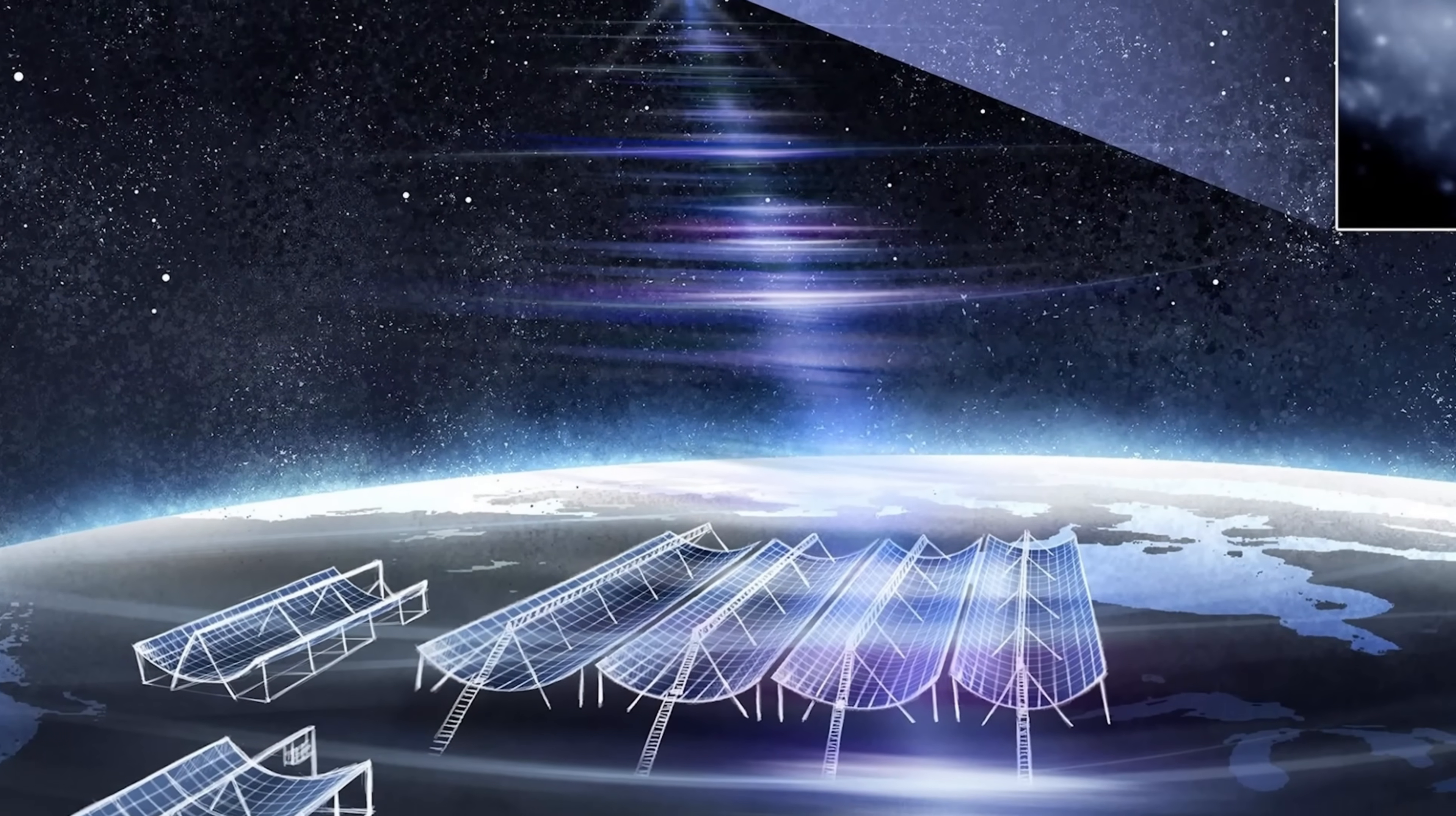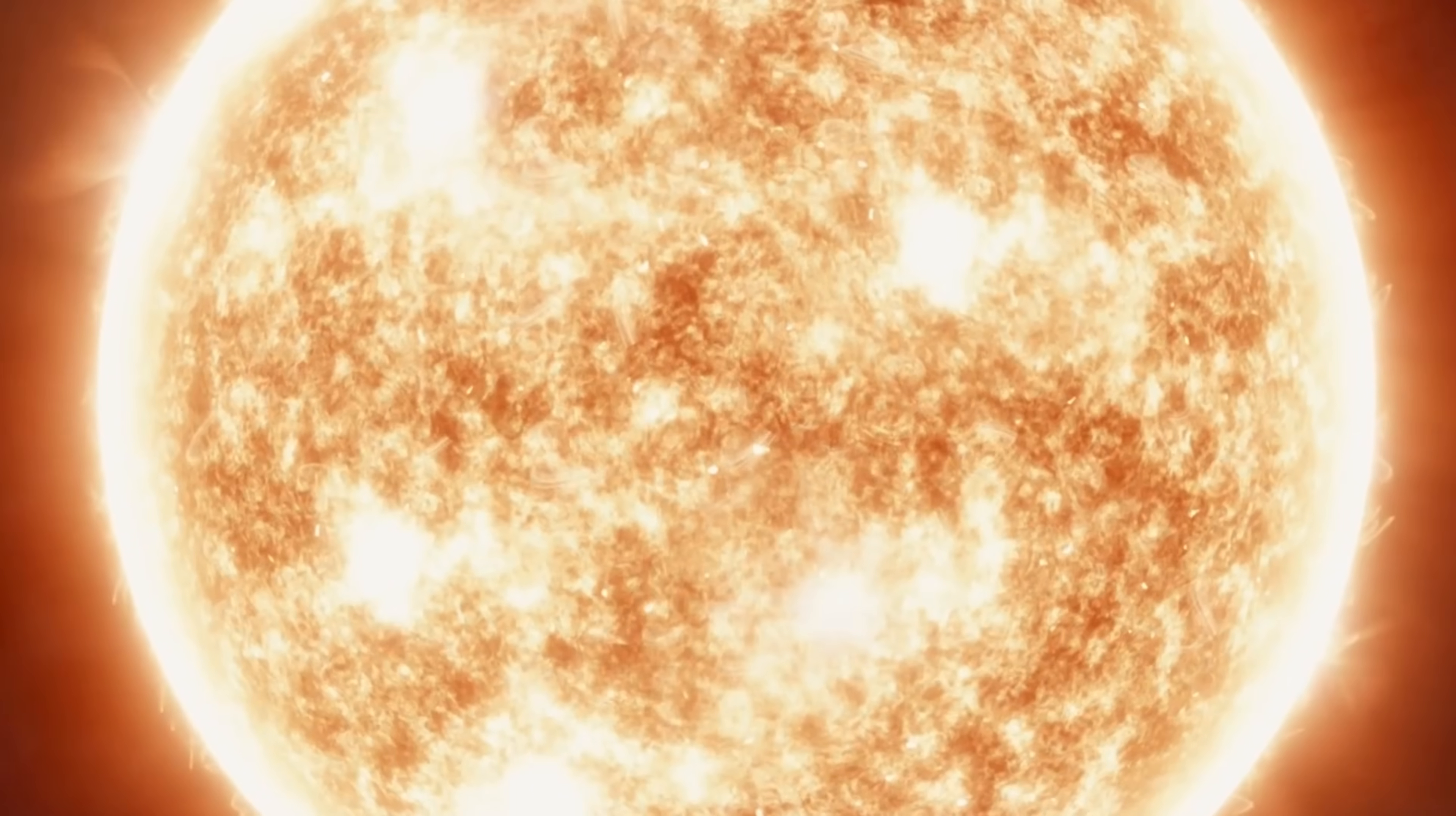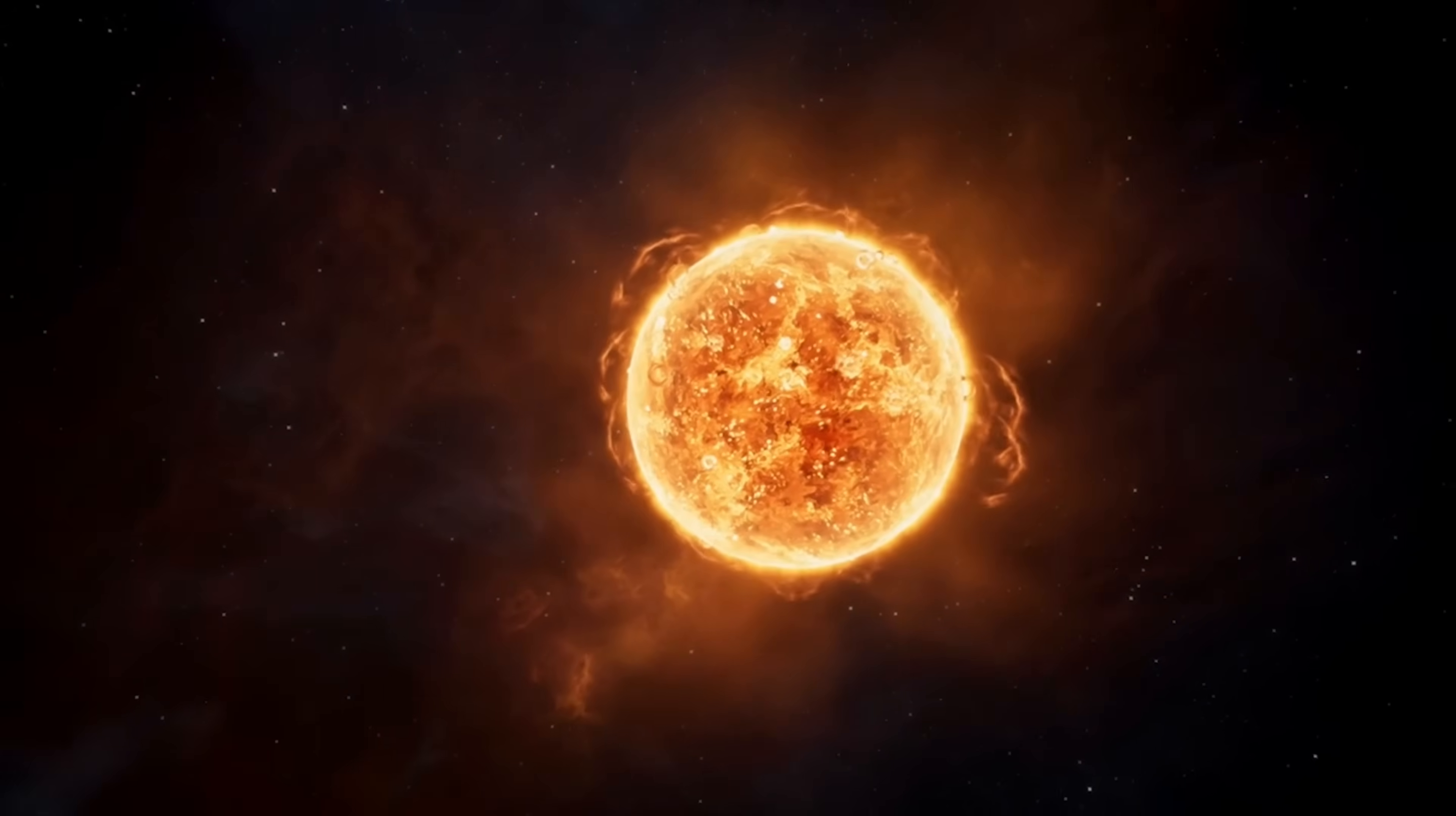Meanwhile, radio observatories listening in the low-frequency spectrum detected faint bursts of static from the direction of the comet. They weren't signals, but they did reveal turbulence in the solar wind around it, a sign that the comet's gas was interacting electrically with the sun's magnetic field. In effect, 3I Atlas carried a plasma sheath, a kind of miniature magnetosphere. No other comet has shown such a persistent electrical signature so far from the sun.